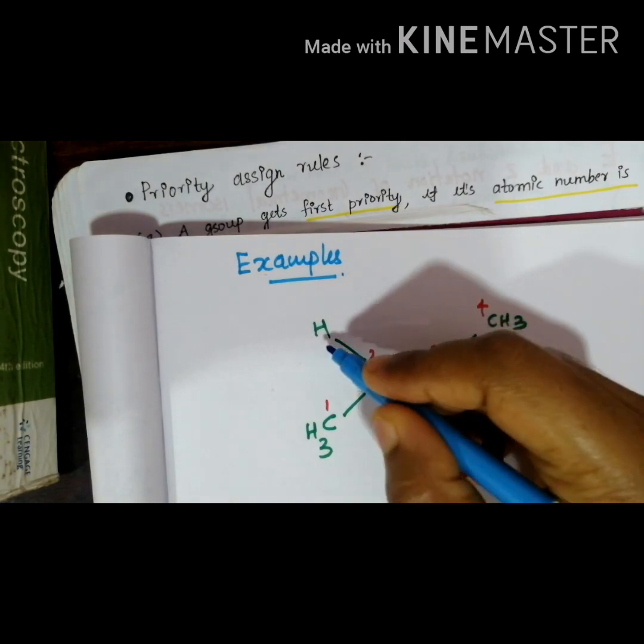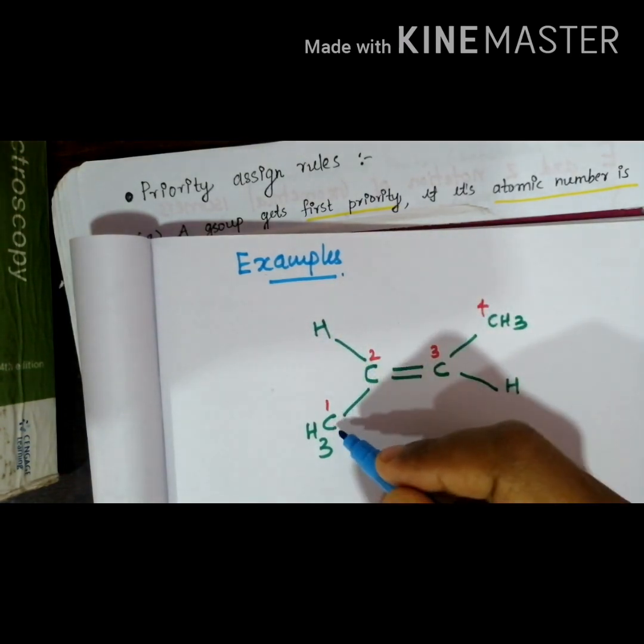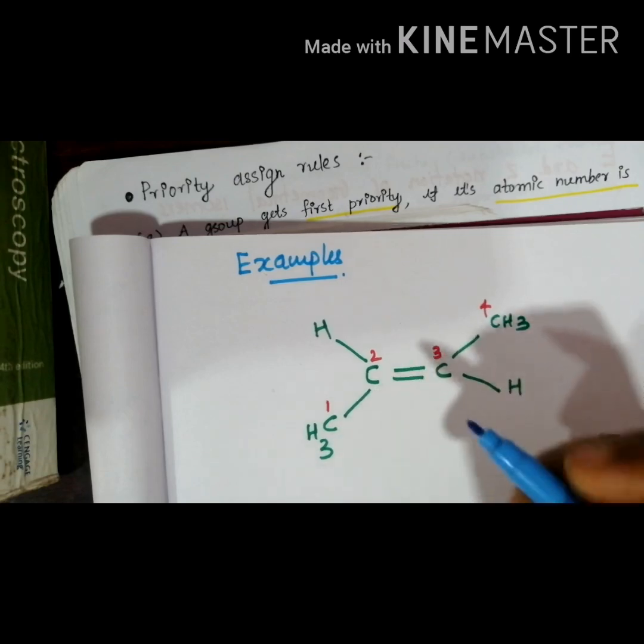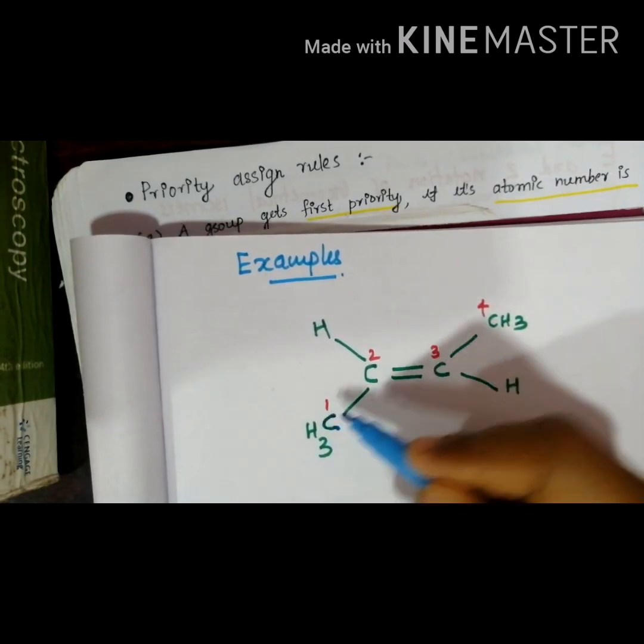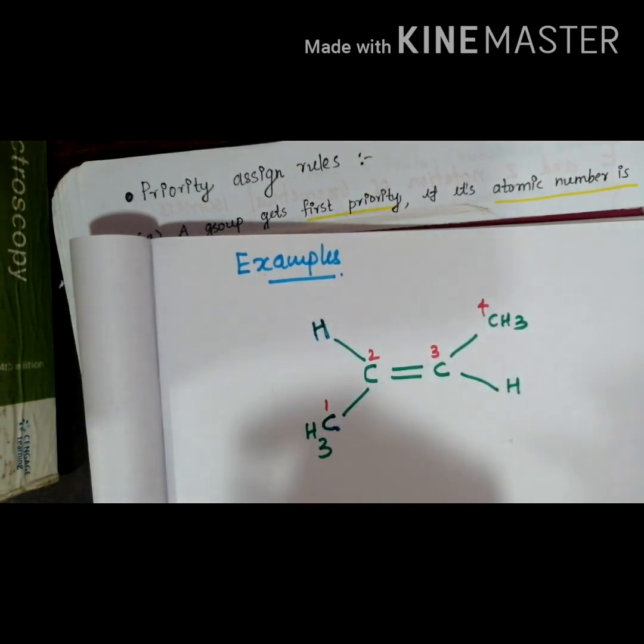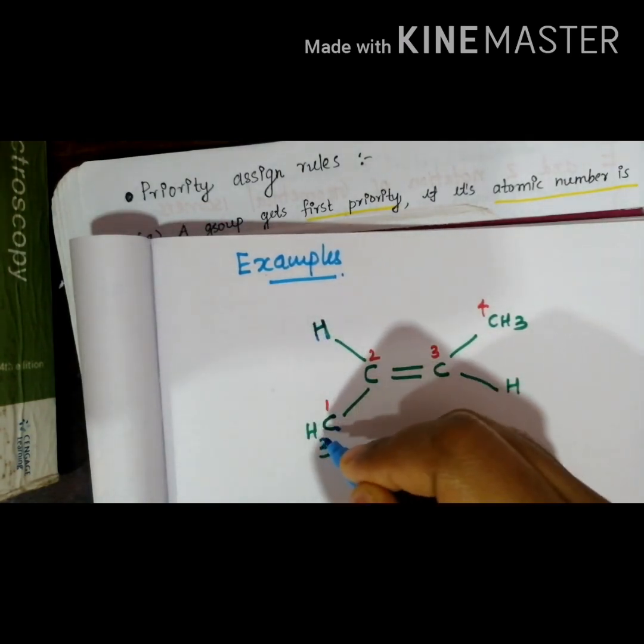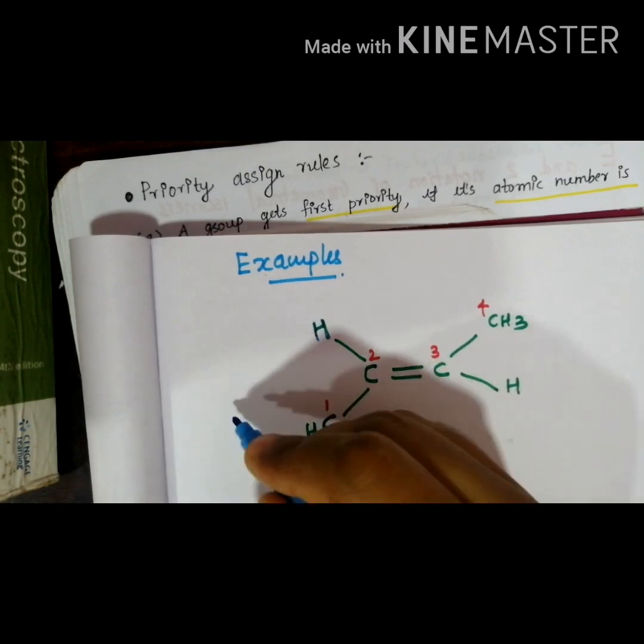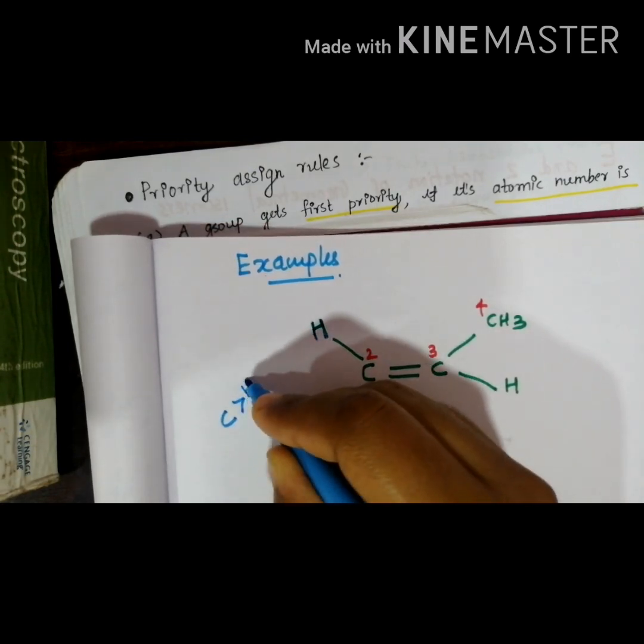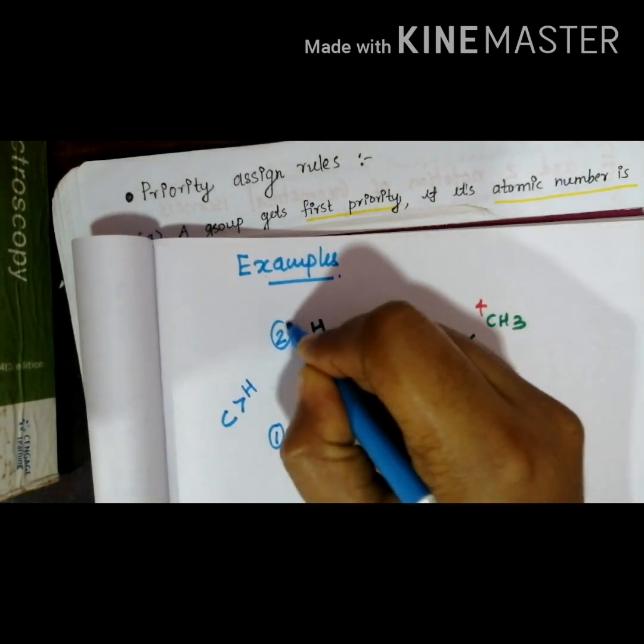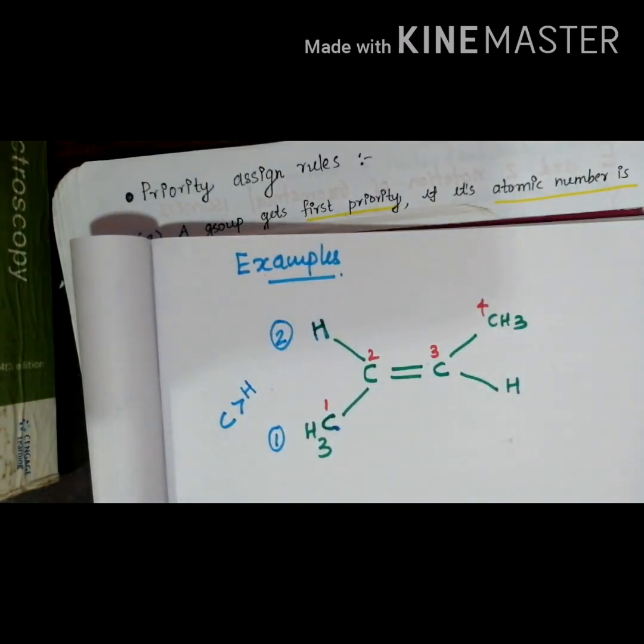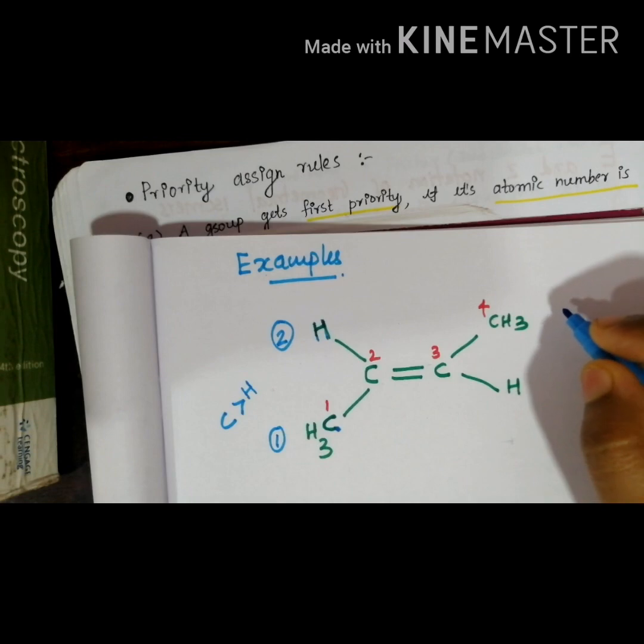That means we are looking for first atom. Here first atom is C, here first atom is only hydrogen. Then we can say this is containing more atomic number. Carbon has more atomic number than hydrogen, then number one, number two. This is priority numbering and here it's just opposite, this is one, this is two.